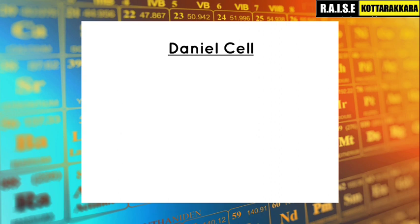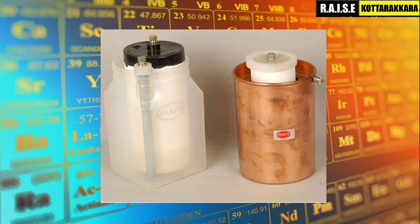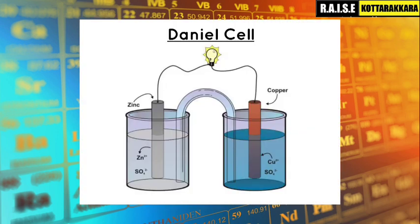How is the Daniell Cell set up? A zinc sulfate solution is placed on the left side, and a copper sulfate solution is placed on the right side. The zinc electrode is in the zinc sulfate solution, and the copper electrode is in the copper sulfate solution. We connect them to form electricity.